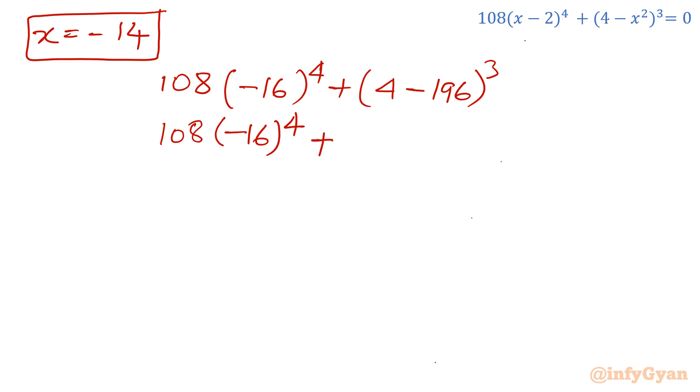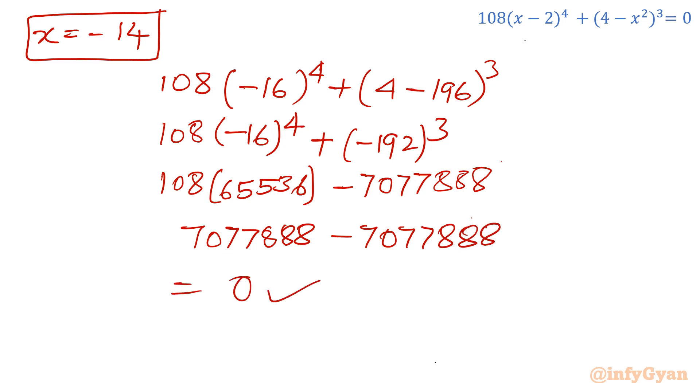Let us verify the last root, x equals -14. I will put 108(-14-2)⁴ plus (4-196)³. 108 times (-16)⁴ plus (-192)³. You can check this value is 108 times 65,536 and this value is -7,077,888. If you multiply, you will get the same value: 7,077,888 minus 7,077,888. This value is 0. This is also true.